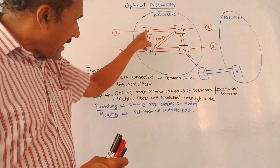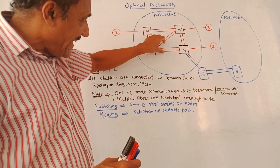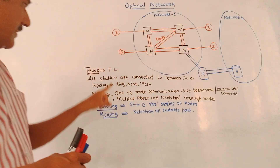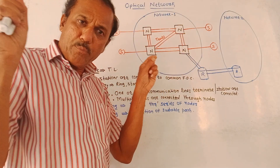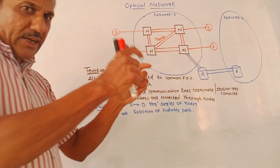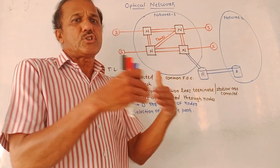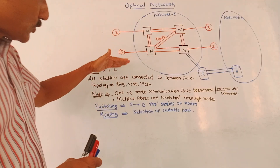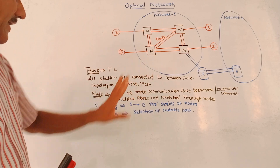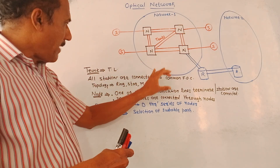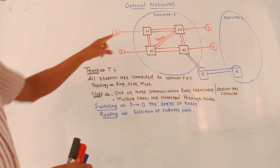Next is the trunk. N stands for the nodes, and the double line in the diagram indicates a trunk. A trunk is basically a transmission line. All the stations are connected to a common fiber optic cable — a single fiber optic cable — using different network connection techniques, which is called the network topology.